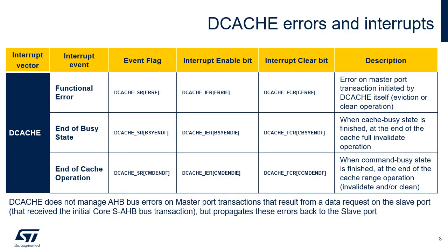All dCache interrupt sources raise the same unique interrupt signal, dCache IT, and use the same interrupt vector. The three sources of the dCache global interrupt are: error detection on data requests initiated by the dCache itself, either for dirty cache line eviction or clean operations, which sets the ERRF bit in the dCache status register; end of full invalidate operation, which sets the BSYENDF bit in the dCache status register; and end of cache range maintenance operation — invalidate, clean and invalidate, or clean — which sets the CMD ENDF bit in the dCache status register.